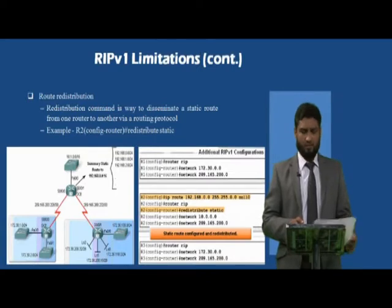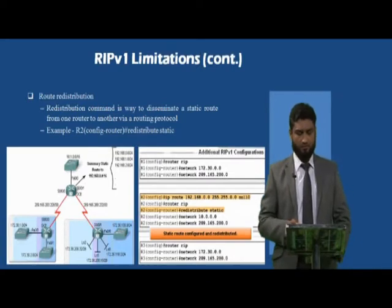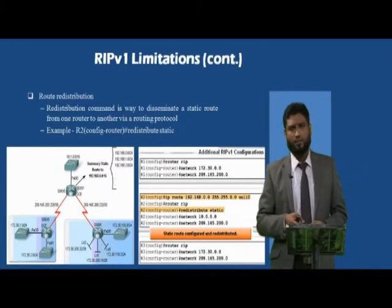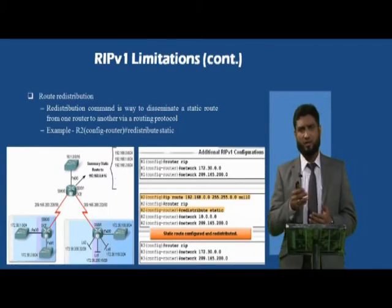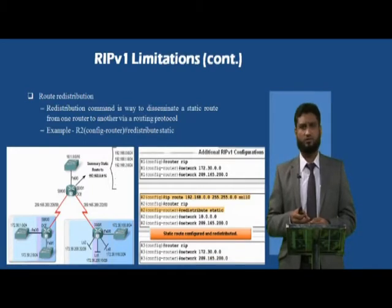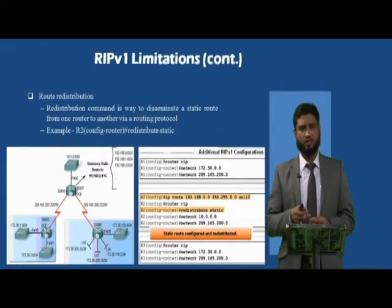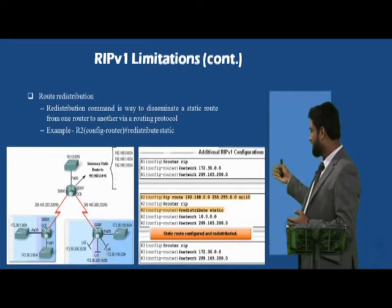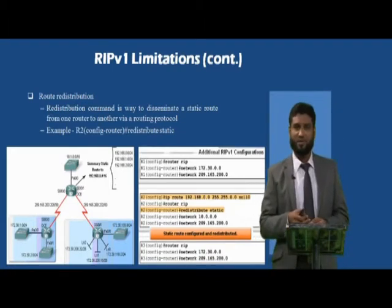Looking at this slide, here is how the topology is configured. In RIP version 1, first we configure 'router rip', then configure the connected networks. Static routing — including default static routing — can also be considered here. From this topology, you can decide which routing is preferable.